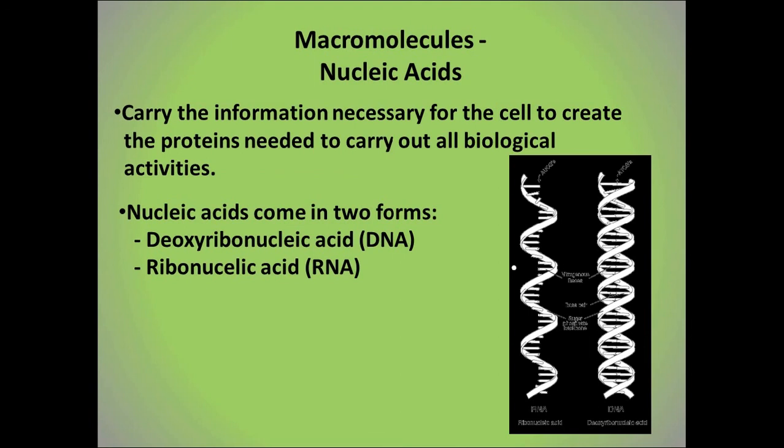Nucleotides are also important in creating ATP — the energy the cell actually uses — which we mentioned briefly in earlier chapters. And also NAD and FAD, which are electron carriers involved in the creation of cellular energy. We will talk extensively about ATP, NAD, and FAD when we discuss cellular respiration and photosynthesis.